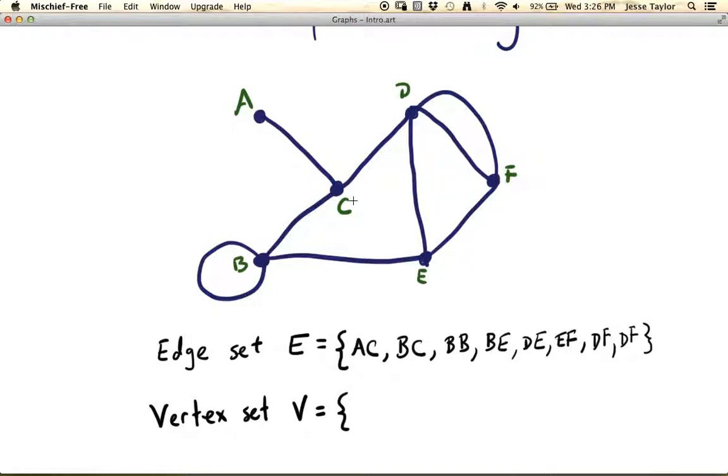Okay, so this is our edge set. There are one, two, three, four, five, six, seven, eight, nine edges. And we have listed one, two, three, four, five, six, seven, eight. Oh, I missed one. So what are we missing here? It looks like we are missing CD or DC.